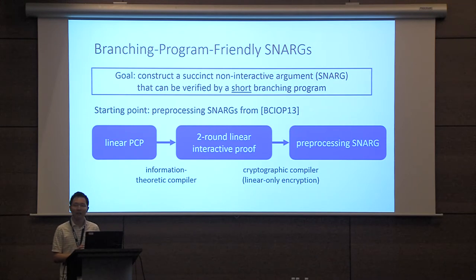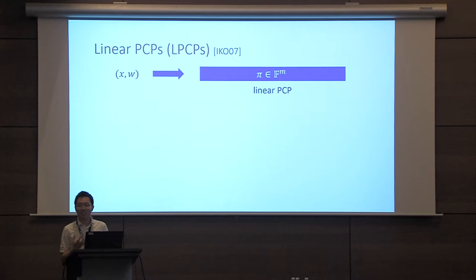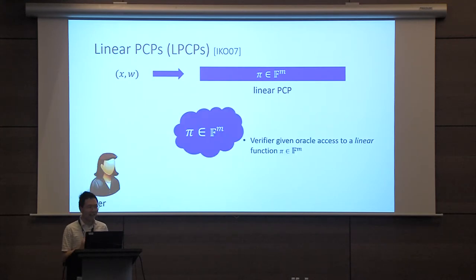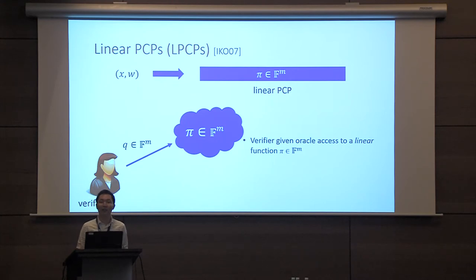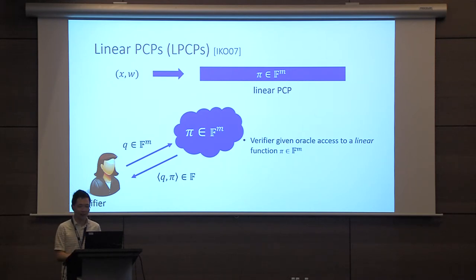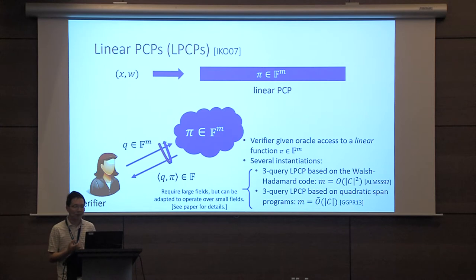Let me revisit the core building blocks. A linear PCP, first used in work by Ishai, Kushilevitz, and Ostrowski, is just a long proof vector. In a linear PCP model, the verifier is given access to a linear function. The verifier submits a query vector to the linear PCP oracle, and the oracle computes the inner product between the query and the proof vector. This can repeat several times, and at the end, the verifier decides whether to accept or reject. There are concrete instantiations based either on the Hadamard code, or on the quadratic span programs and quadratic arithmetic programs of Gennaro, Gentry, Parno, and Rakova.